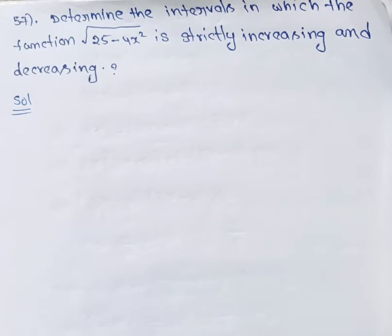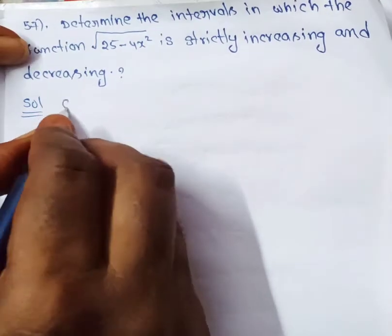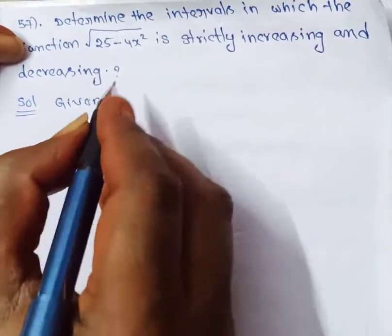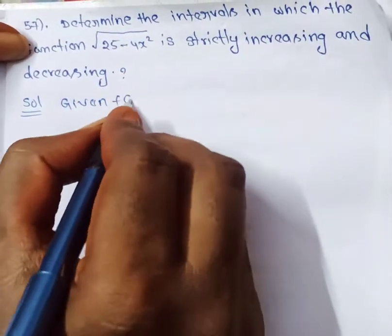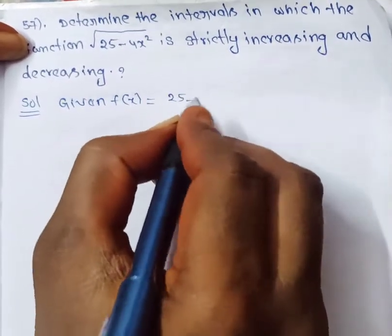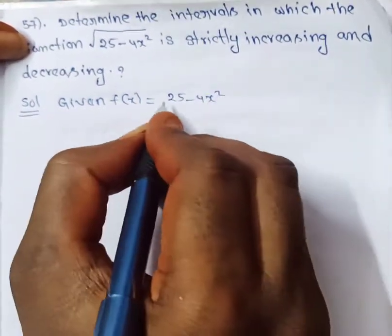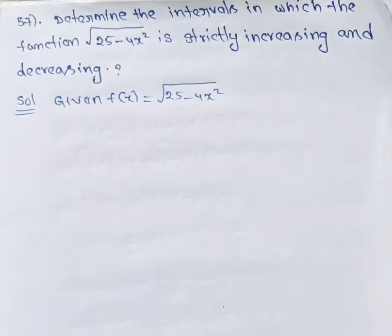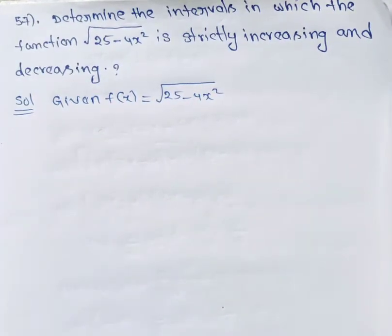Determine the intervals in which the function f(x) = √(25 − 4x²) is strictly increasing and decreasing. The given function is f(x) = √(25 − 4x²).